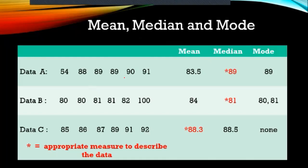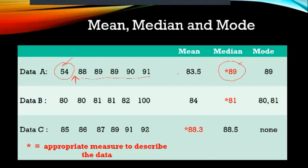Let's look at three data sets. In data set A, there's an extremely low value while the other values from 88 to 91 are close together. Given this, the appropriate central tendency is the median — highlighted in red — because there's an extremely low value. If we use the mean of 83.5, it won't be representative because 83.5 isn't even in the middle of the data.